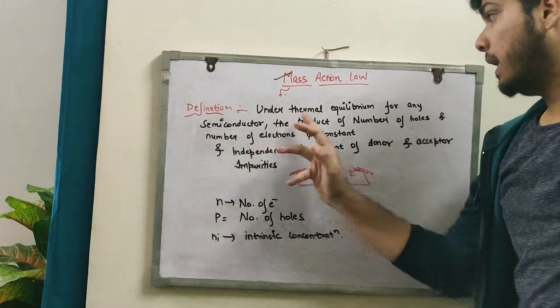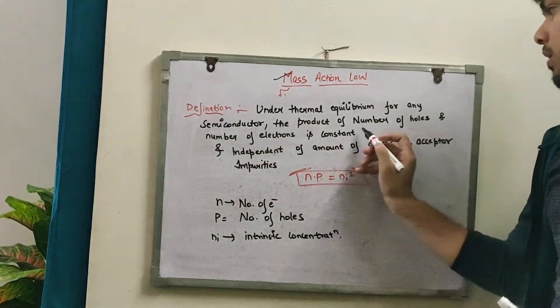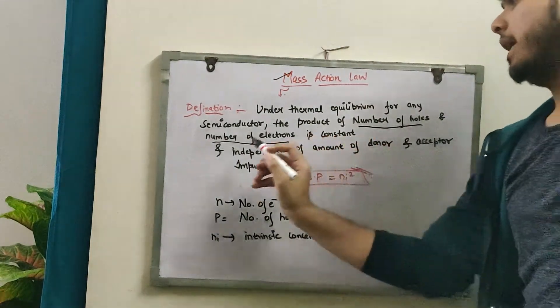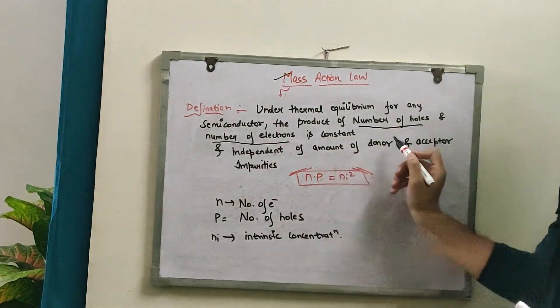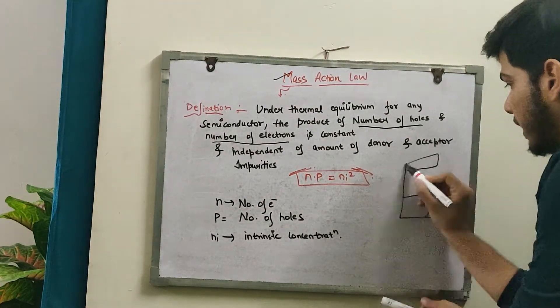Mass action law definition: Under thermal equilibrium for any semiconductor, the product of number of holes and electrons is constant and independent of amount of donor and acceptor impurities.